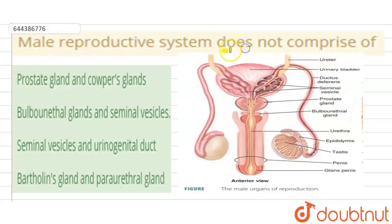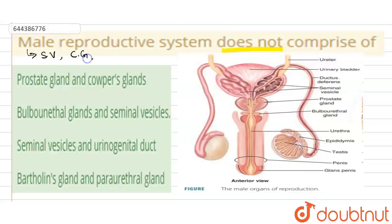The question is: male reproductive system does not comprise of — four options are given. The male reproductive system consists of many things: first, a pair of testes; second, accessory reproductive ducts — that includes rete testes, epididymis, vas deferens, ejaculatory duct, etc.; and another one is male accessory reproductive glands, which include one pair of seminal vesicles and one pair of Cowper's glands.